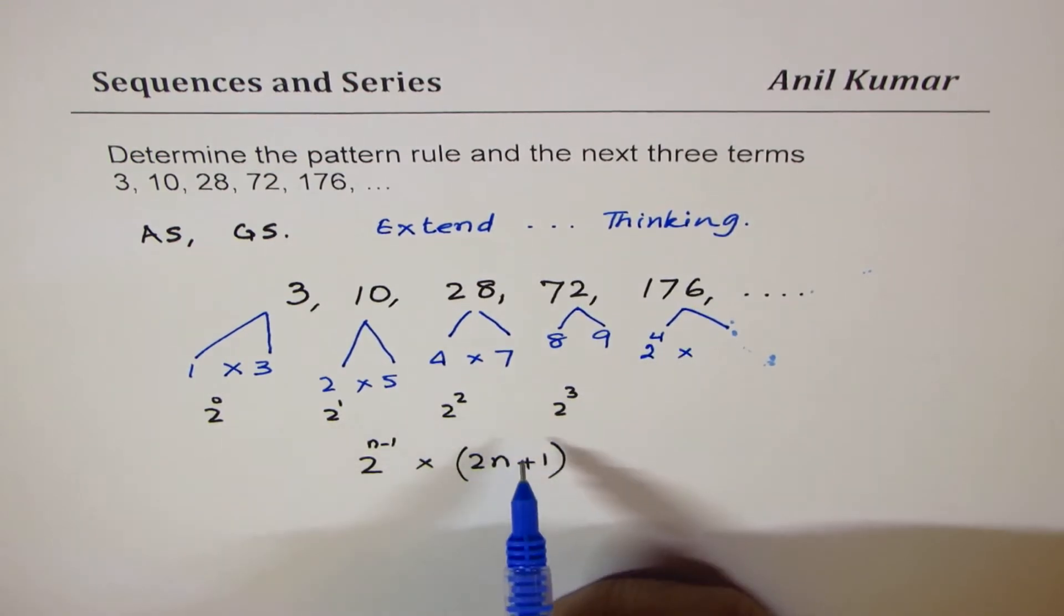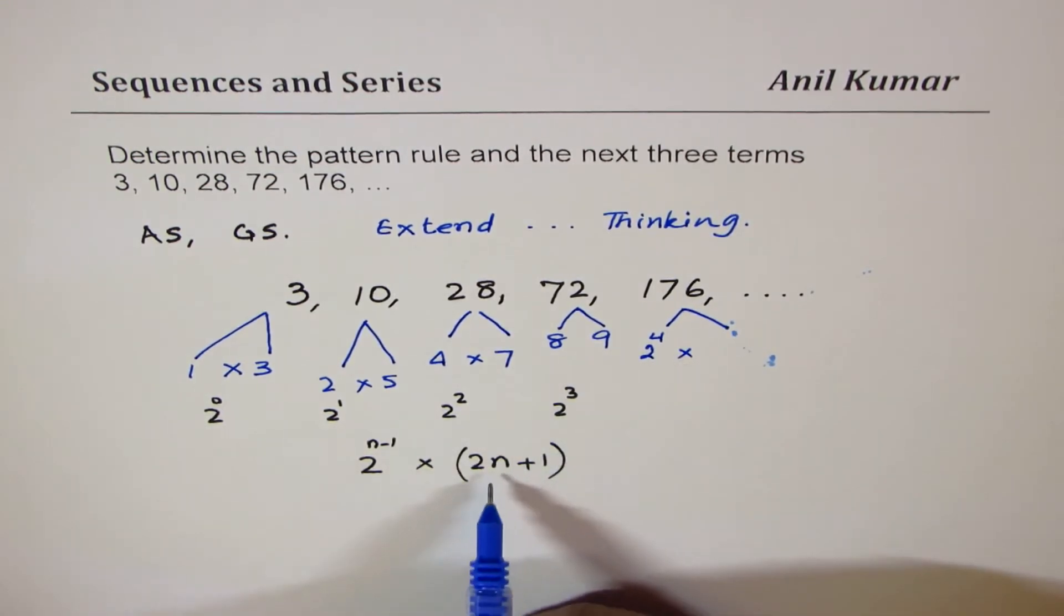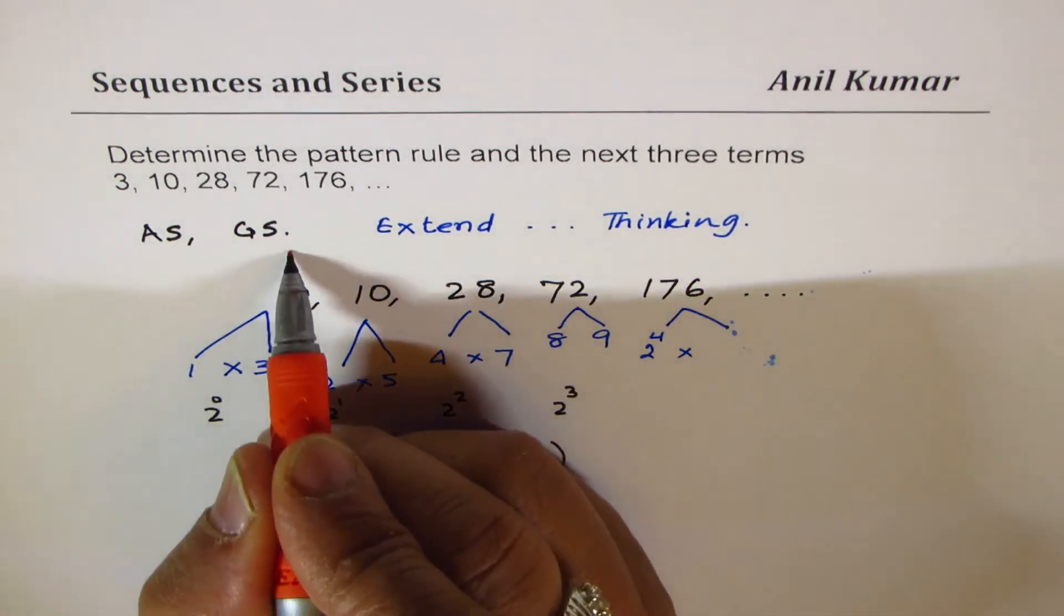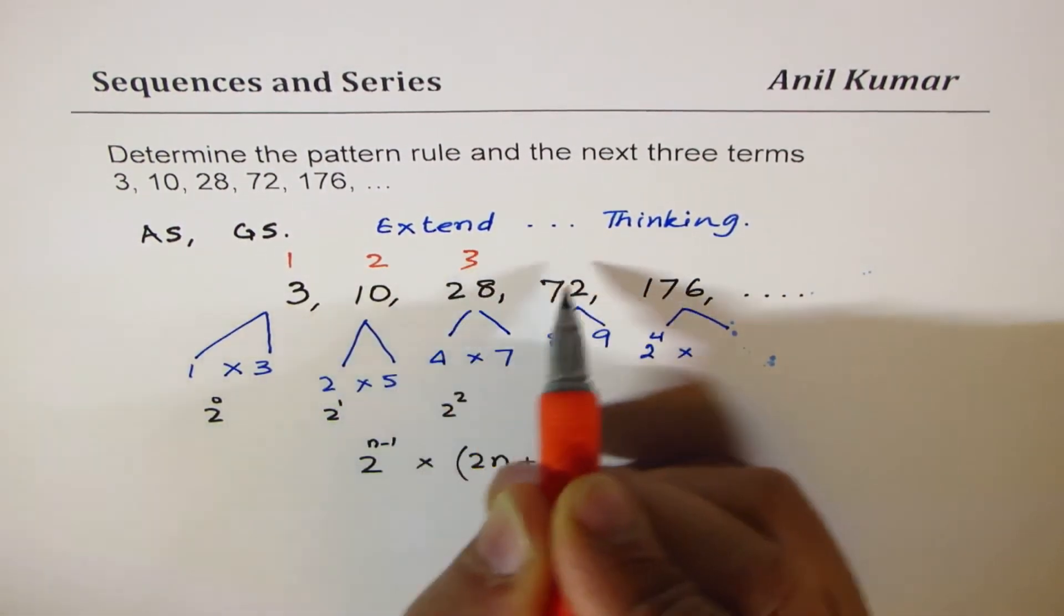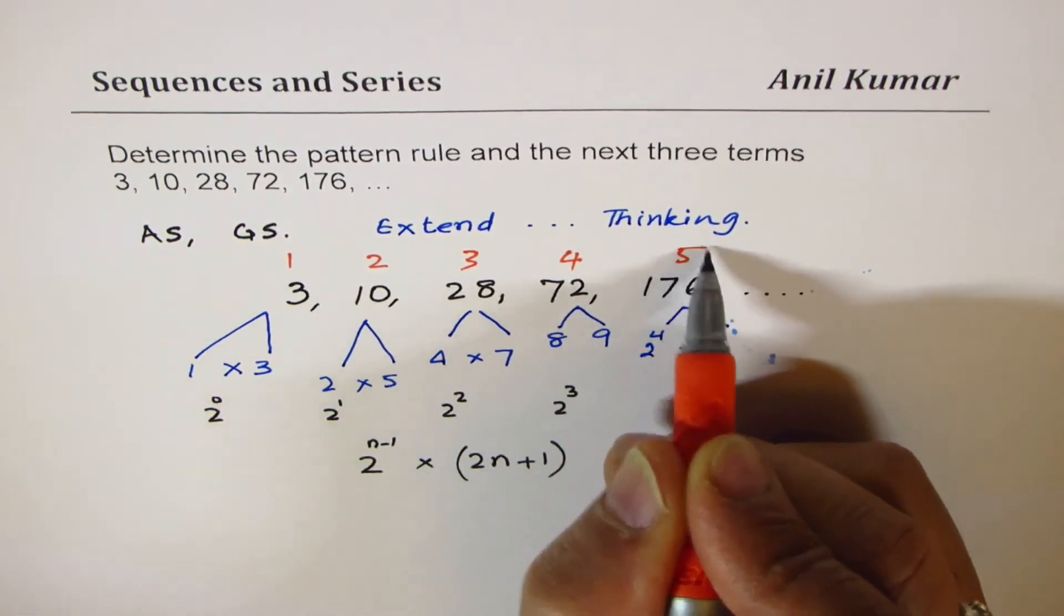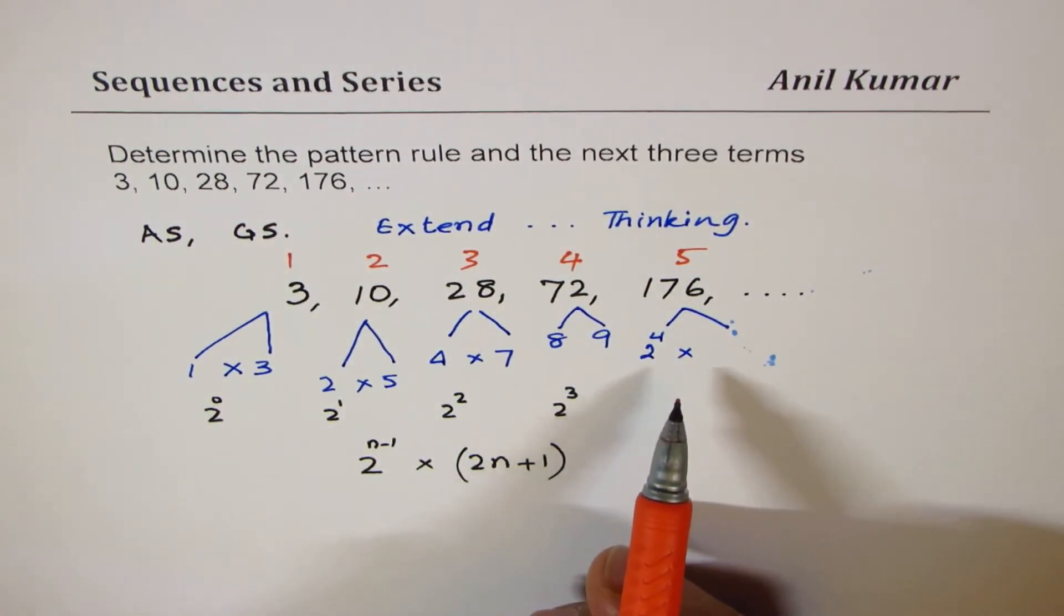And we have to multiply this by, if I replace this with 4, this is term number 1, this is 2, this is 3, this is 4, this is 5. Now, so basically, I have to, here we have to write 5. Term number 5.